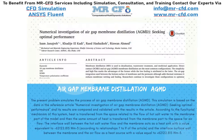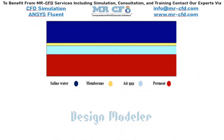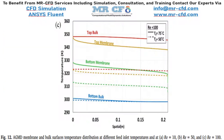In this project we will validate the data provided by the paper named 'Numerical Investigation of Air Gap Membrane Distillation: Seeking Optimal Performance.' The figure two of the paper has been extracted showing the model implemented in the paper. The present model is drawn in two dimensions using Design Modeler software. The meshing has been done using ANSYS Meshing software and the mesh type is structured.